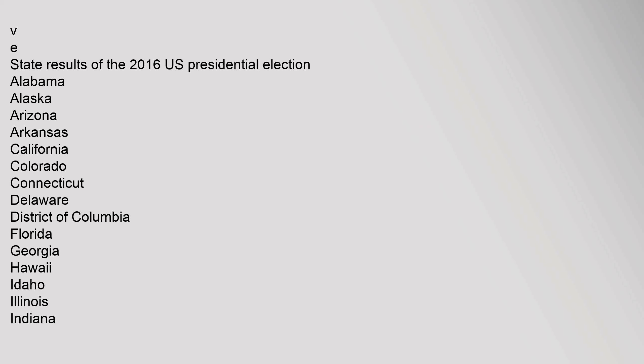State results of the 2016 U.S. Presidential Election: Alabama, Alaska, Arizona, Arkansas, California, Colorado, Connecticut, Delaware, District of Columbia, Florida, Georgia, Hawaii, Idaho, Illinois, Indiana, Iowa, Kansas, Kentucky, Louisiana, Maine, Maryland, Massachusetts, Michigan, Minnesota, Mississippi, Missouri, Montana, Nebraska, Nevada, New Hampshire, New Jersey, New Mexico, New York.